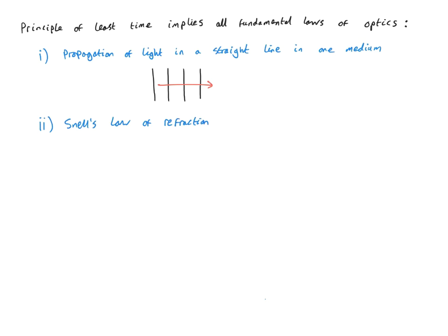This is where we have a change in the direction of the propagation of light when going from a medium with one refractive index N1 to a medium with a different refractive index N2 across an interface. Light striking the interface at a particular angle from medium N1 emerges into medium N2 at a different angle. This is entirely a consequence of the principle of least time — because light travels at different speeds in the two media. The shortest path would be a straight line, but that is not the path that's observed. And thirdly, the law of reflection.